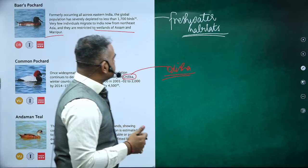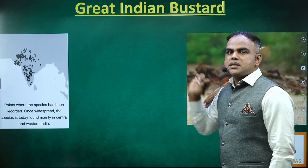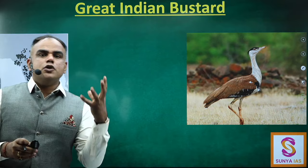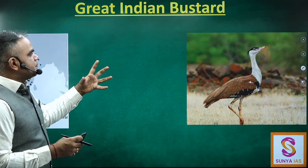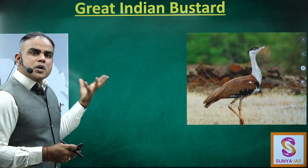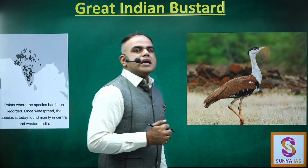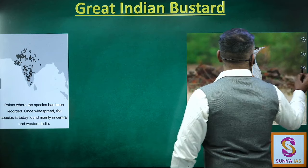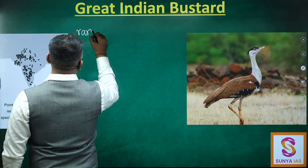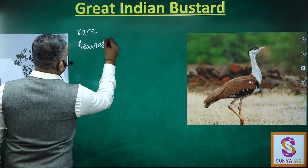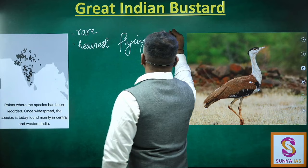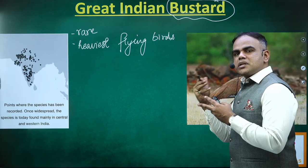Now let us look at Great Indian Bustard in detail, as a lot of current affairs updates have happened here. It is one of the heaviest flying birds. There are other bustard species in India: Bengal Florican, Lesser Florican, and McQueen — so there are three bustard species prominently found in India. Great Indian Bustard is critically endangered, just like the other bustard species, and its population is rapidly declining. It is native to the Indian subcontinent and is found both in India and Pakistan, but has been vanishing from the lower parts. It is now basically found in the western part of India, predominantly in Rajasthan and Gujarat, but also in Andhra Pradesh, Karnataka, and Maharashtra.